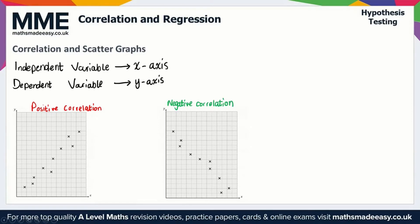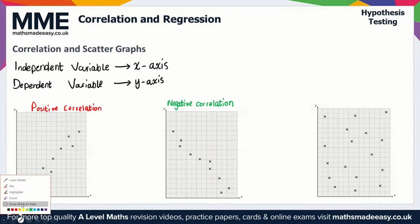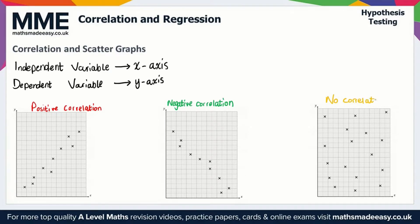Finally, we also have no correlation. With no correlation, we can't essentially see a pattern within the data. We can't tell if it's positive or negative — there is no obvious pattern. So there's no clear link between the variables.